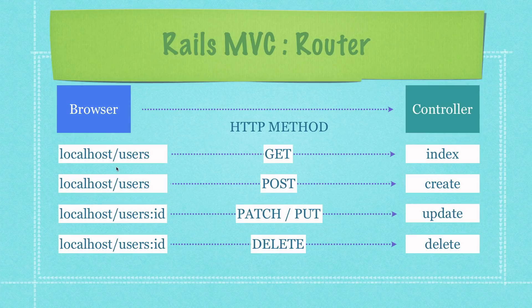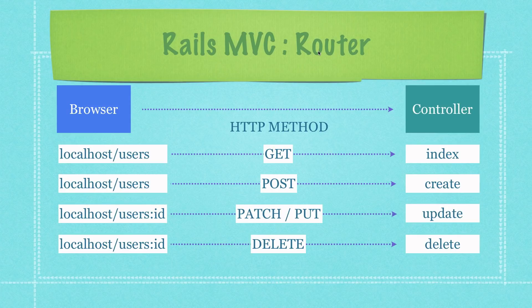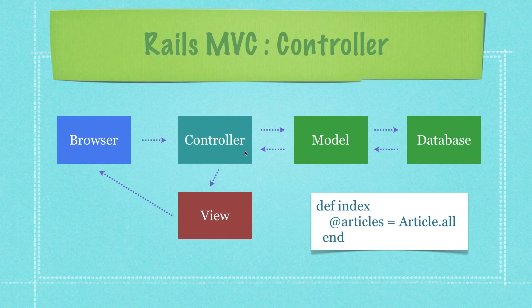When the user types in 'users' and uses the GET method, the controller knows it needs to execute the index function. When 'users' is used with the POST method, the controller knows it has to use the create method. If we type in 'users' with a specific ID, that tells the controller to call the update method for that specific user ID. That is the job of the router, and the great thing is Rails creates all of this for us. The index method is very simple — Article.all calls the model and database and passes over all articles to display.